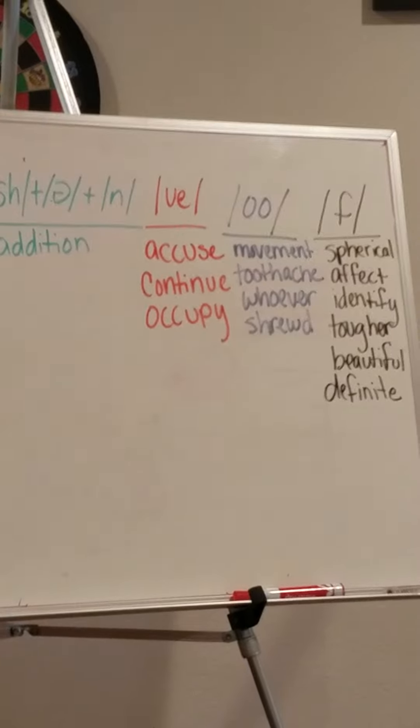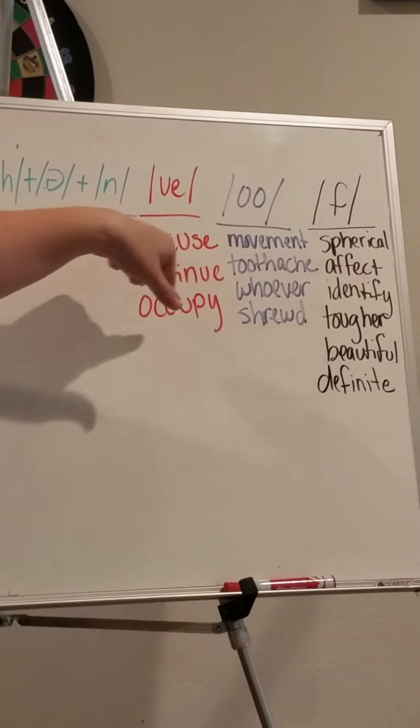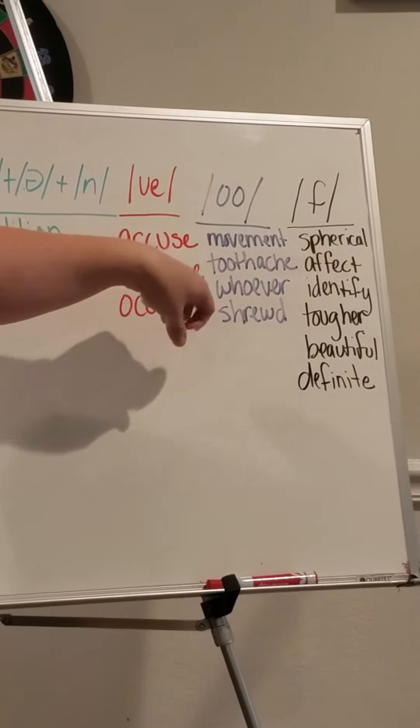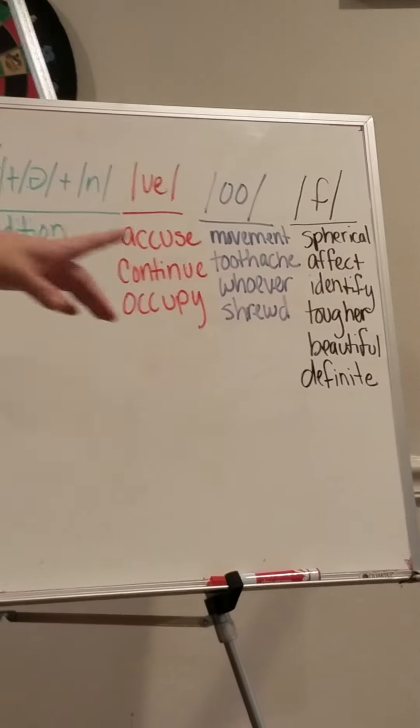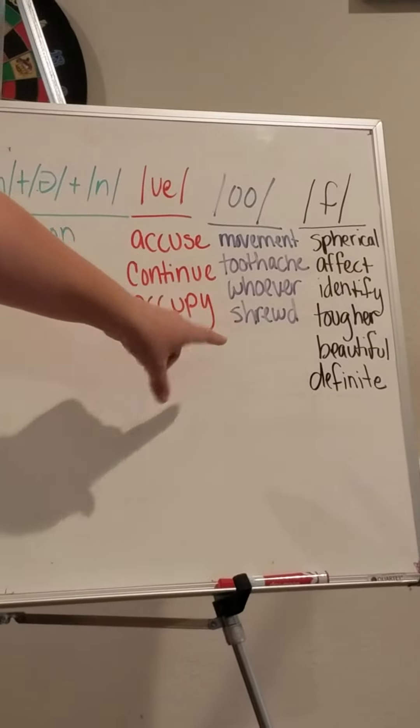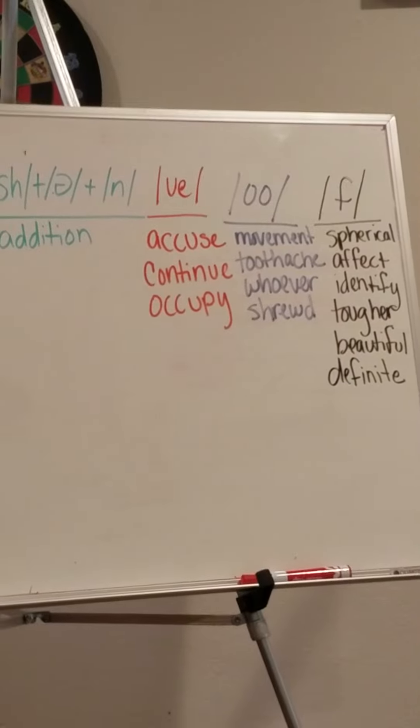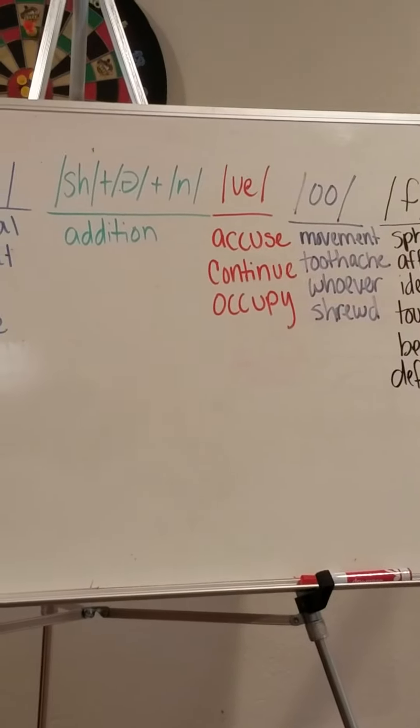Then we move into the OO sound. So movement, toothache, whoever, and shrewd. It doesn't even have the two O's, but it has the E-W that makes the same sound. So you have to say that, not just how it's spelled.